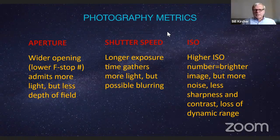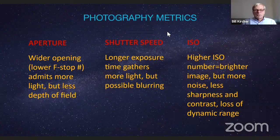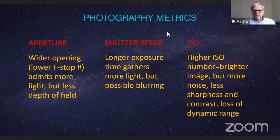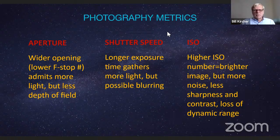If all you have is a cell phone, you can adjust ISO and shutter speed by downloading an app like Nightcap for iPhone. See what it looks like at night. For dedicated astroimaging cameras, the term is more often 'gain' rather than ISO — it's a different scale but the same principle. Higher gain means more light; lower gain means less. Too much gain or too much ISO gives you a crummy picture, maybe nothing. You've got to adjust it and look at the results.